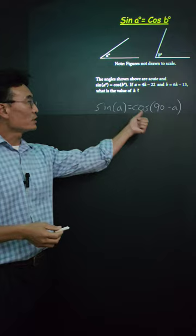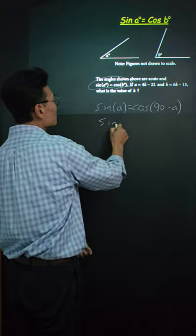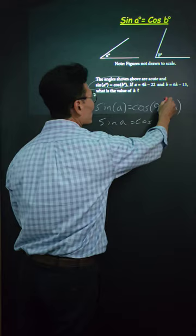Then, we're given that sine of A equals cosine of B. So we could let 90 minus A equal to B.